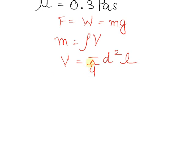If we put both these values in this f equation we get the value for force equals to rho pi by 4 d square l into g.